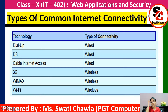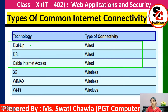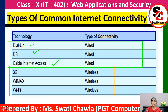Next topic is types of common internet connectivity. There are six types: dial-up, DSL, cable internet access, 3G, WiMAX, and Wi-Fi. The first three — dial-up, DSL, and cable internet access — are wired connections. The last three — 3G, WiMAX, and Wi-Fi — are wireless connections. So in an exam, if asked to name two wireless and two wired internet connectivity types, you can write two examples from each category.